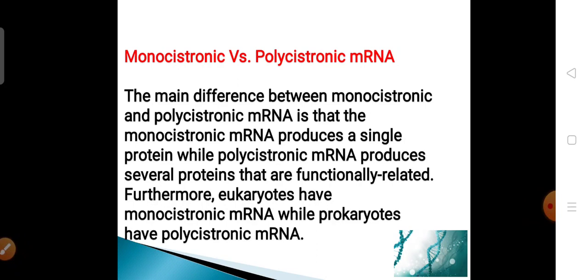What is the main difference between a monocistronic and a polycistronic mRNA? The main difference is that monocistronic mRNA produces a single protein — monocistronic mRNA contains information required for the synthesis of a single protein. A polycistronic mRNA, on the other hand, produces several proteins that are functionally related. A polycistronic messenger contains information for the synthesis of several proteins that are functionally related.